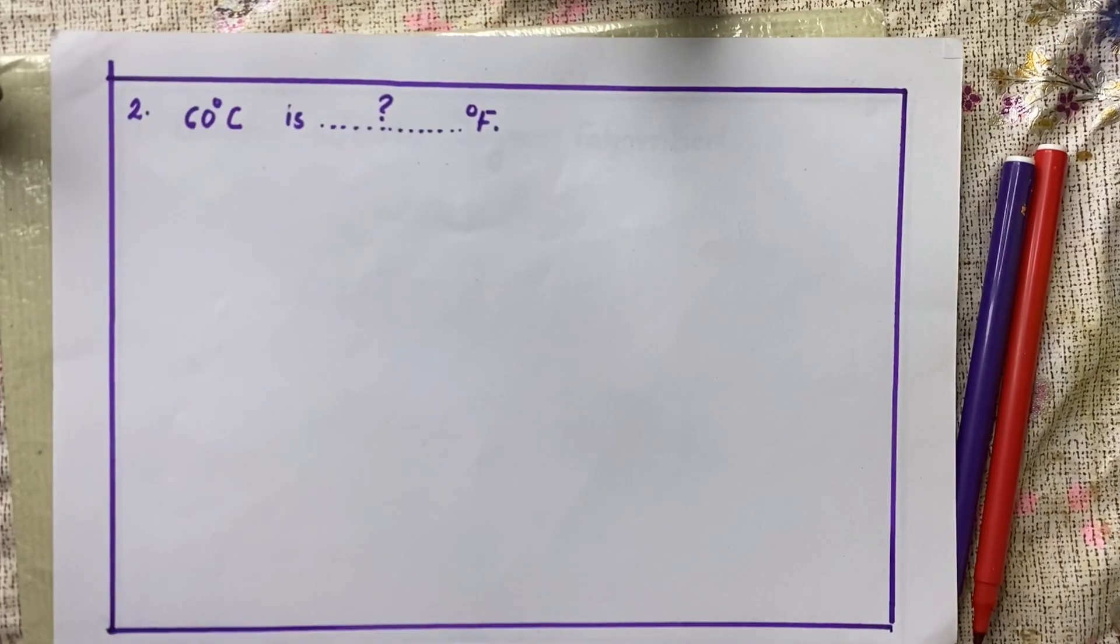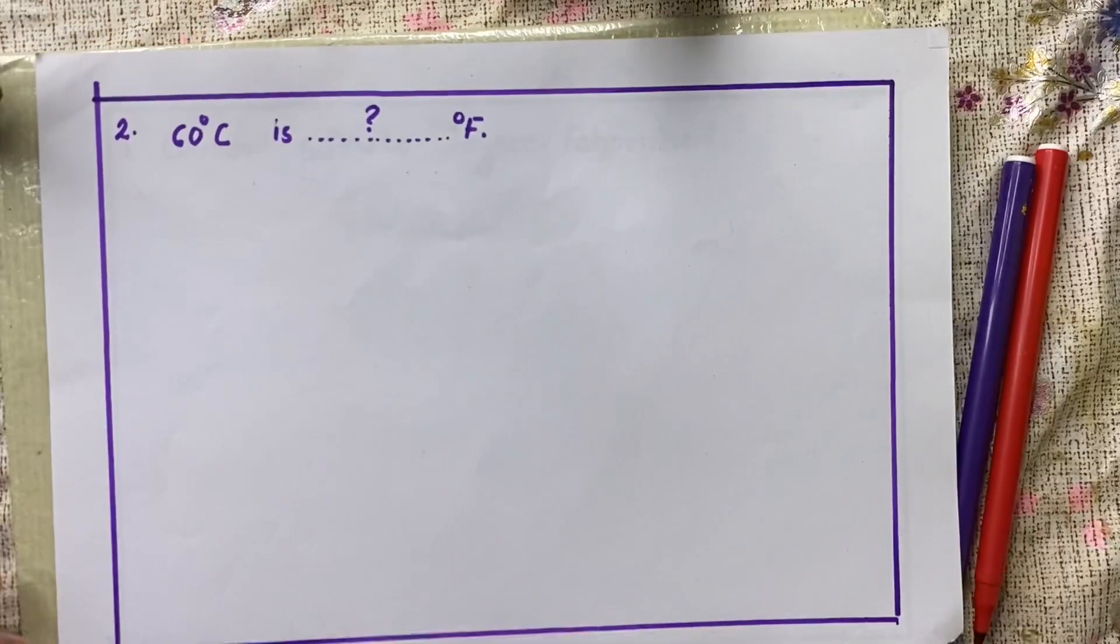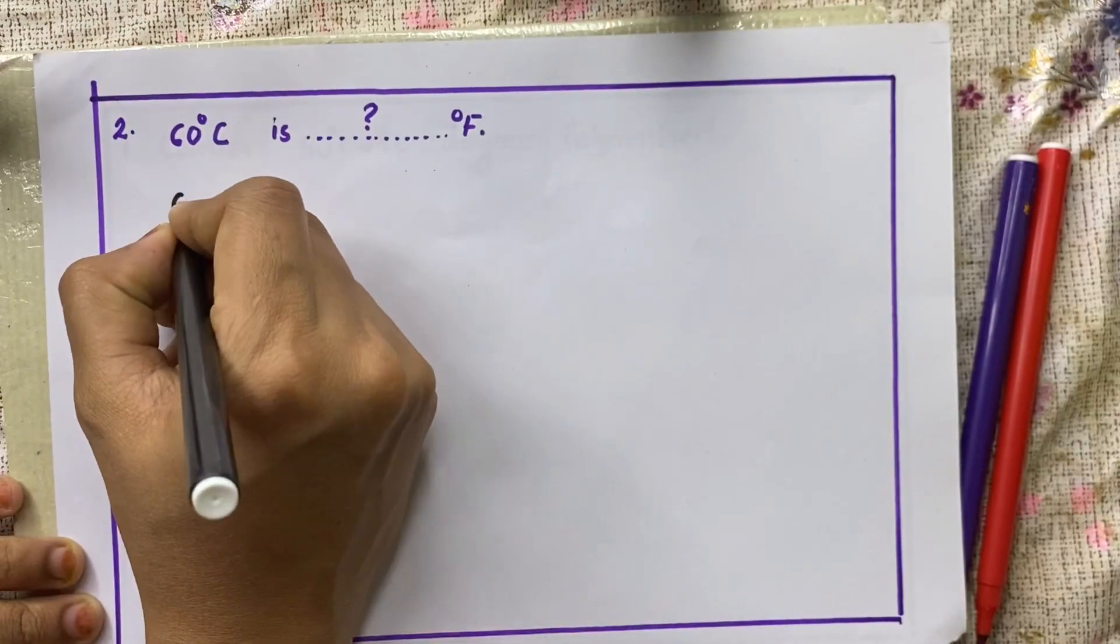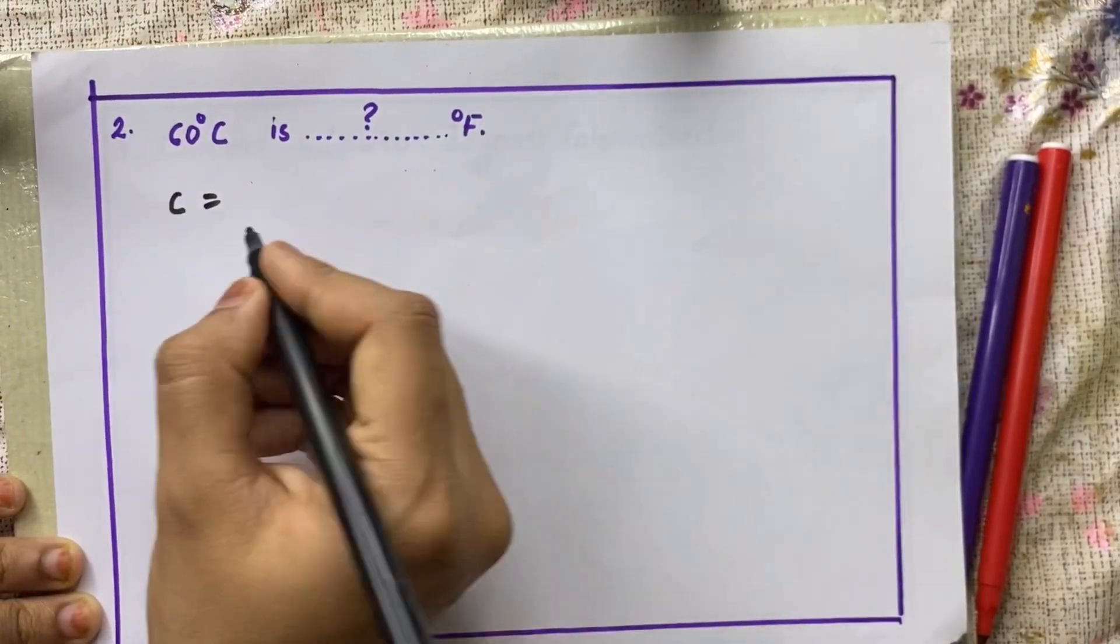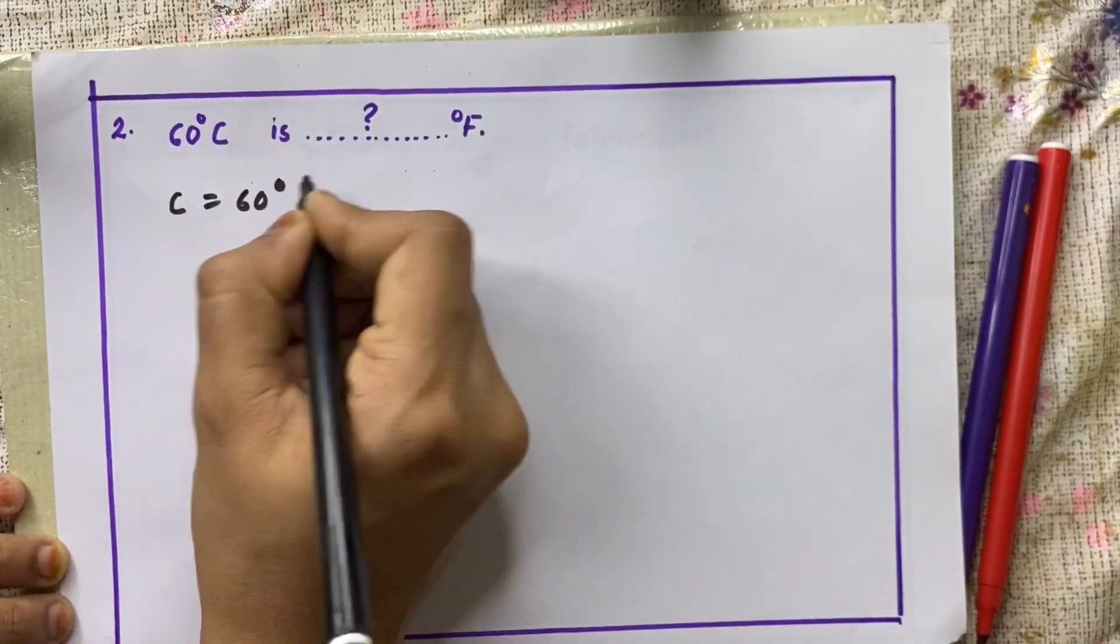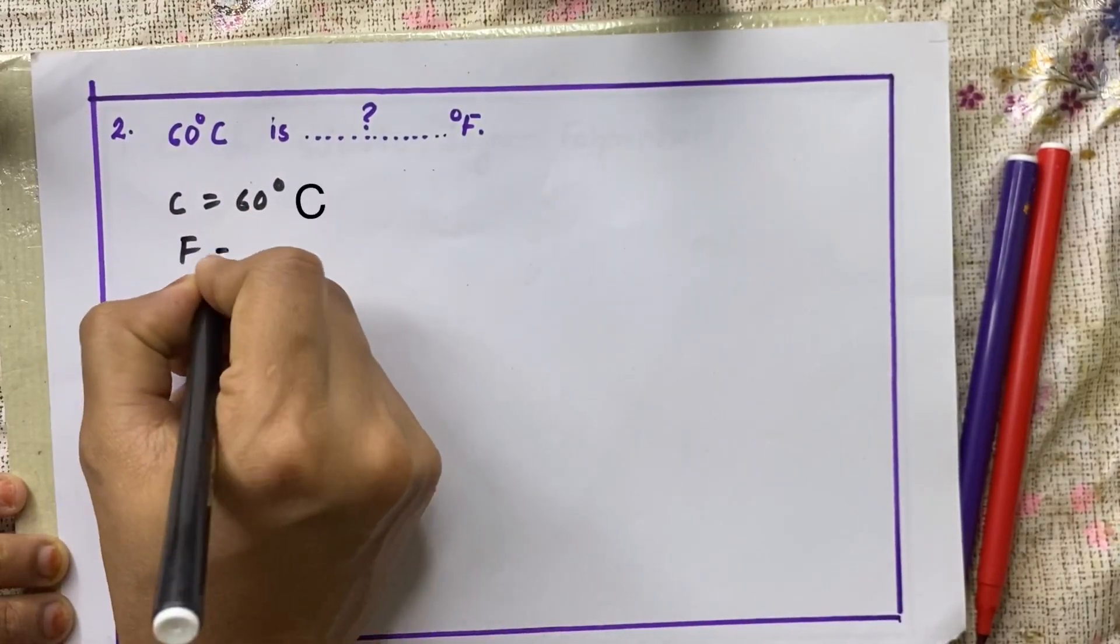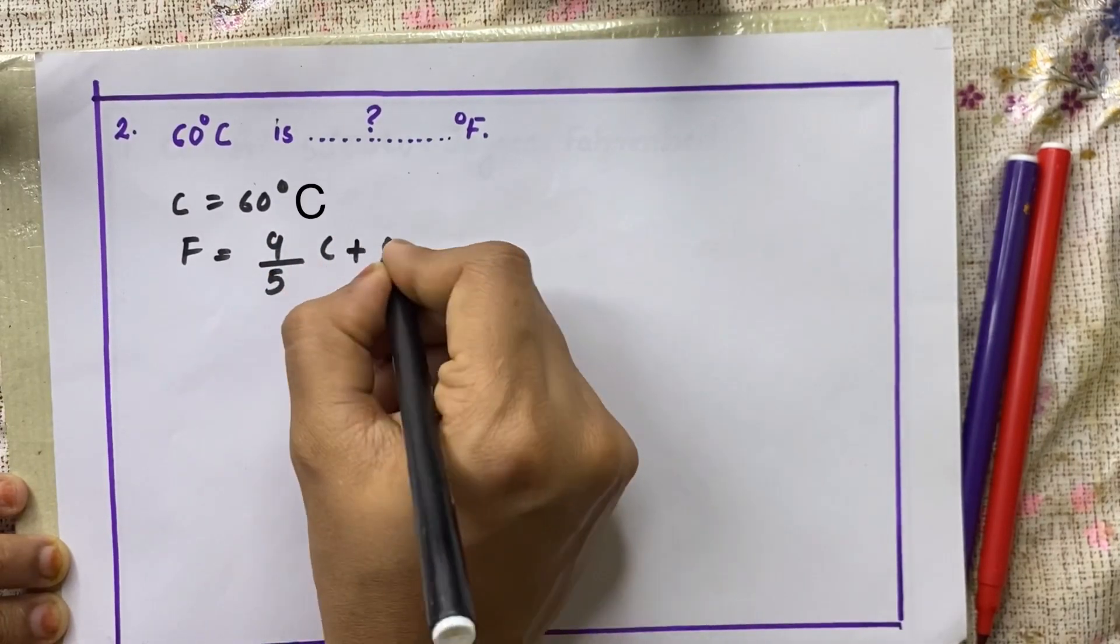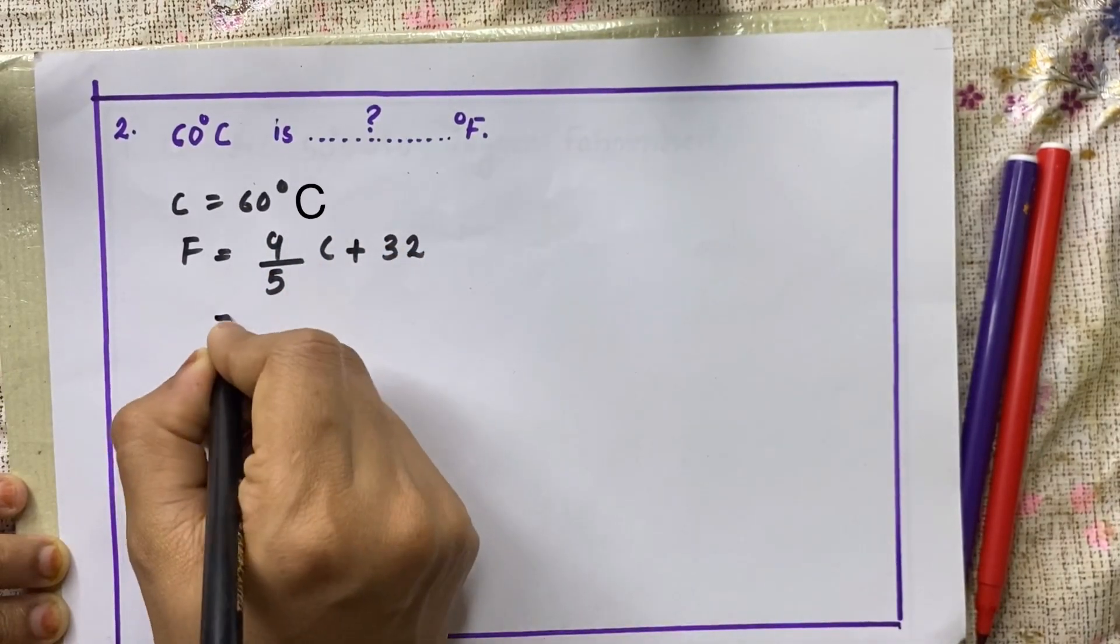Then this is our second question. I hope everybody got the answer for the first question, so we can go for the second one. 60 degree Celsius is dash degree Fahrenheit. We have to calculate the degree Fahrenheit, the value in degree Fahrenheit. So C is equal to 60 degrees, and F is equal to our equation, 9 by 5 C plus 32. We have to input the values.